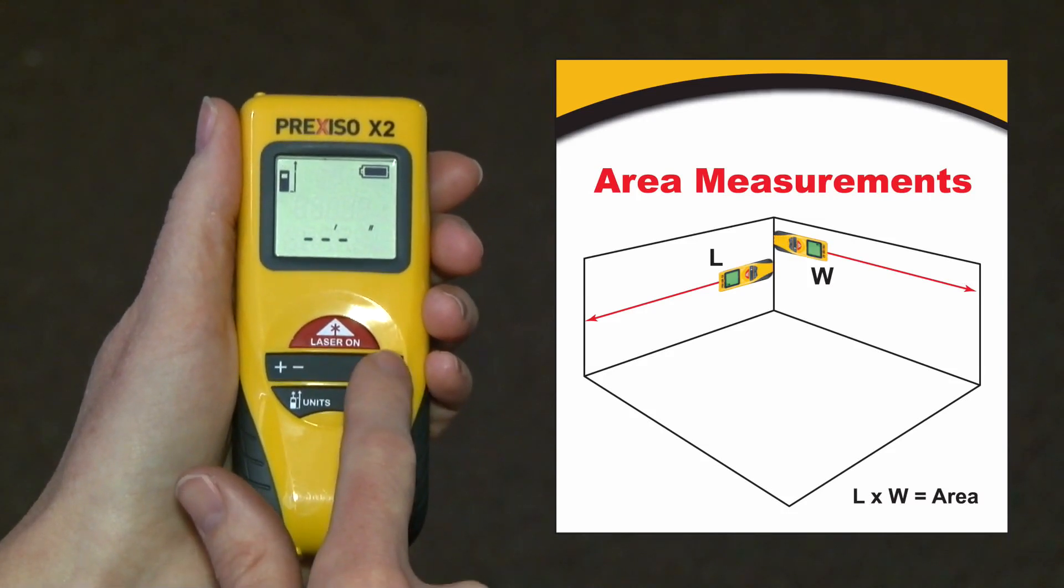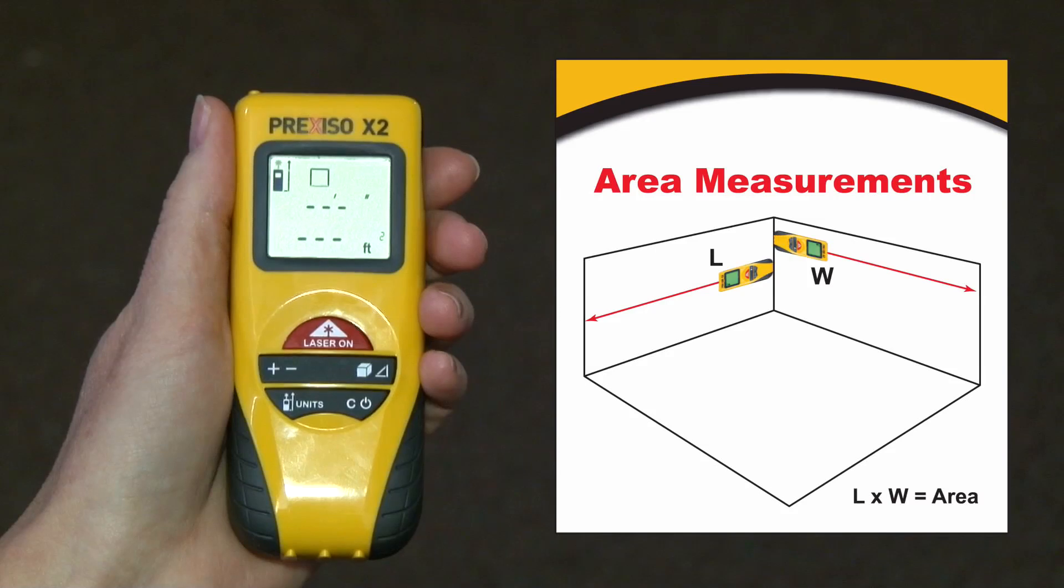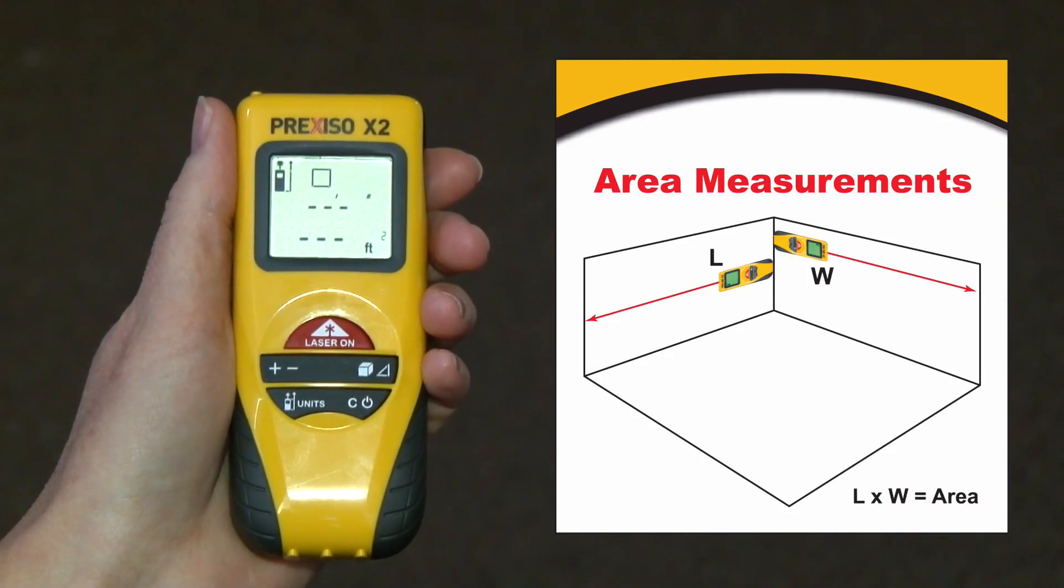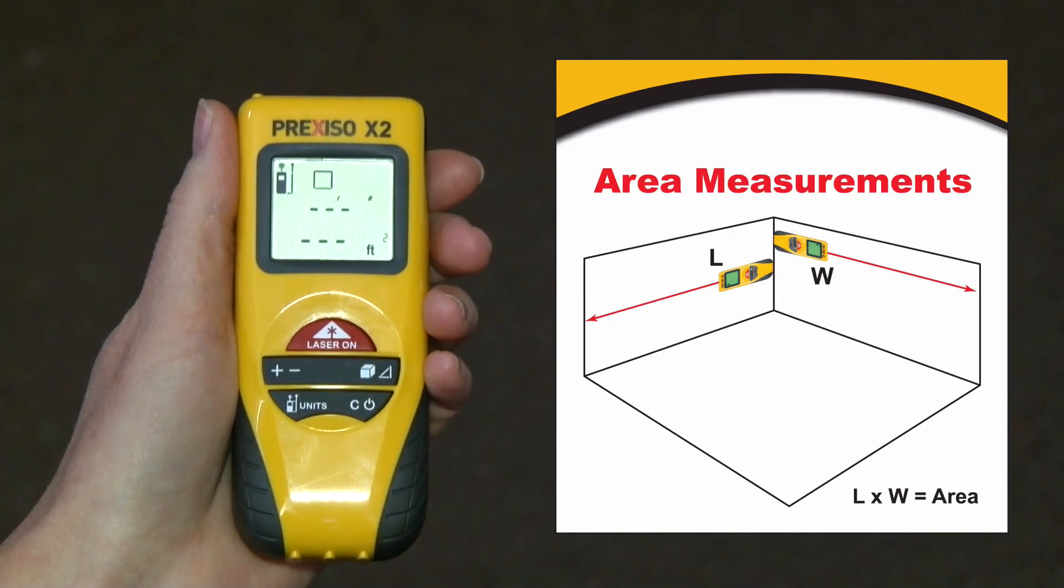Then I press the mode key right here. This is going to allow me to quickly toggle through my choices for the measurement I want to take. By pressing it once, we're telling the device we want to measure an area and you'll see a square shape appear in the display.